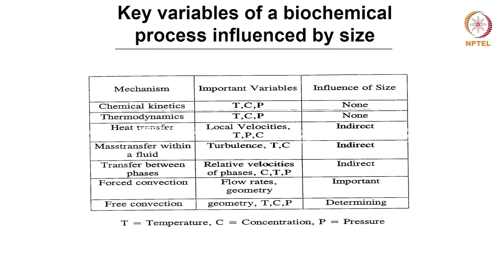Mass transfer within a fluid is more influenced by local velocities and turbulence, and may be indirectly related to size. However, for forced convection or free convection, size becomes very important, where other variables like flow rate and geometry start playing a crucial role.